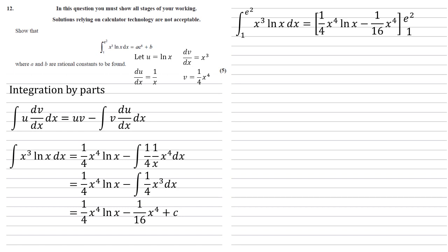Now what we're going to do is substitute the e squared into what we've just worked out and subtract the same thing but with one substituted into it. So here we go. We've got our e squared substituted into the x: a quarter e squared to the power of four times ln e squared minus a sixteenth e squared to the power of four. And then we're taking away the same thing but with the one in there. So x to the power of four, if x is one, that just becomes one. So we've got a quarter ln one minus a sixteenth.